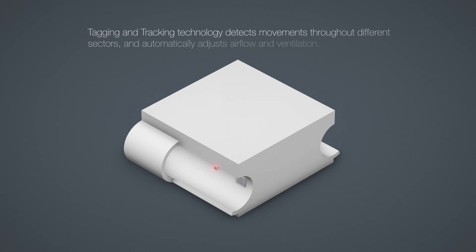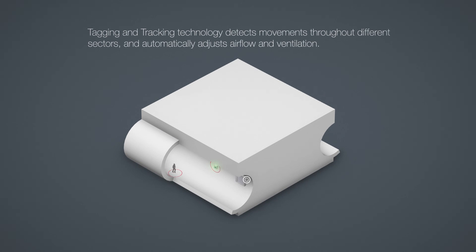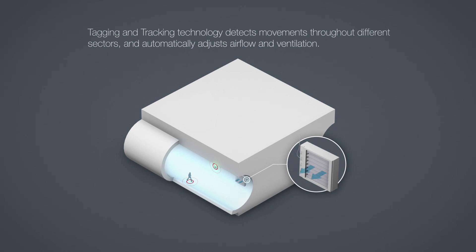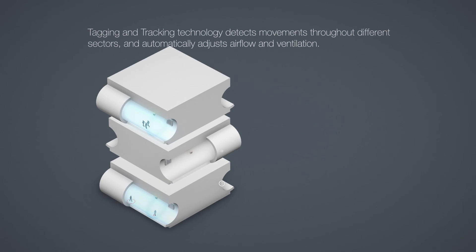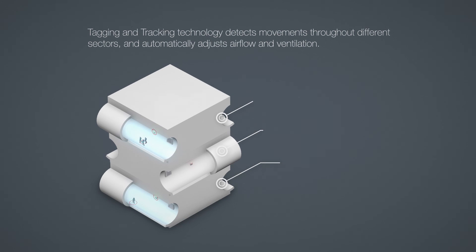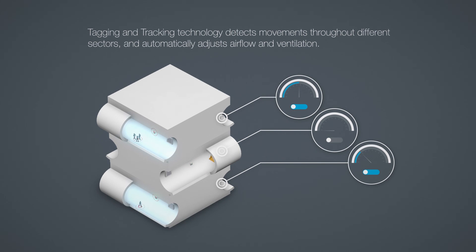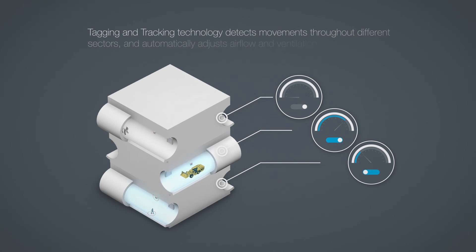It uses tagging and tracking technology for an intelligent ventilation on-demand system. Underground workers and vehicles are electronically tagged, detecting their movements throughout different sectors of the mine. When personnel or machines enter or leave a specific sector, the software automatically adjusts the airflow and ventilation.